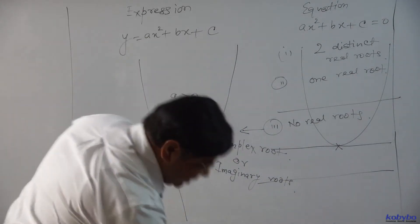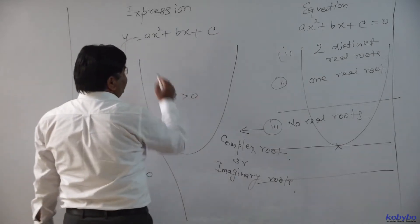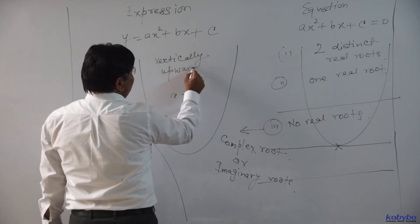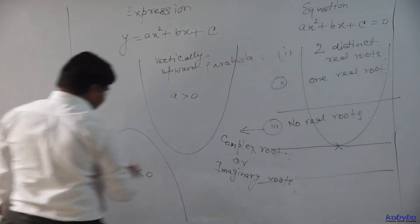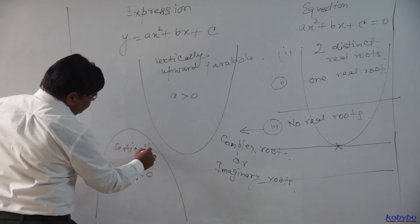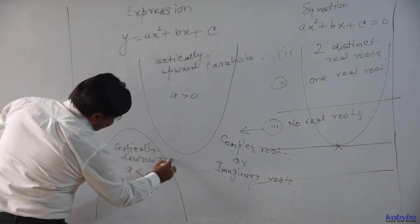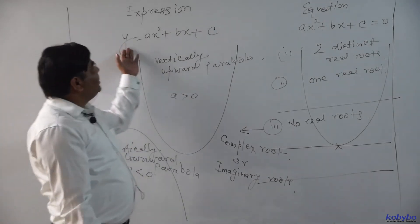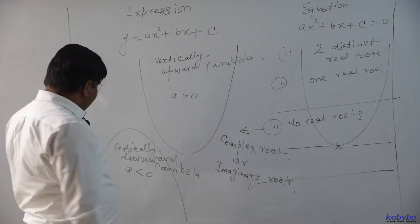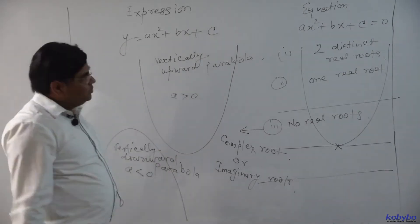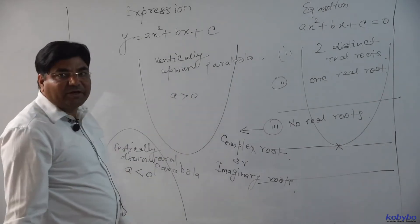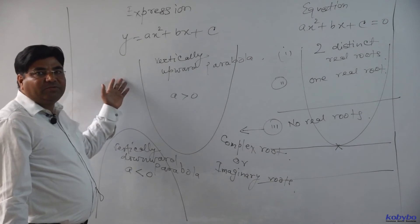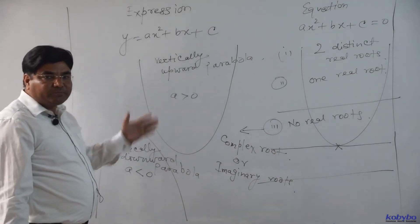So the condition is very much clear. The graph of this quadratic expression is a vertically upward parabola, and the other graph is known as a vertically downward parabola. This will be discussed later on, because this is the introductory portion of quadratic equations and expressions — you have to remember as a fact that the graph is either vertically upward or vertically downward.